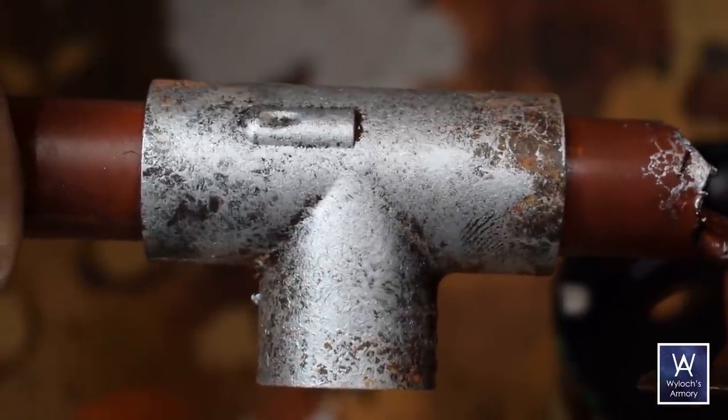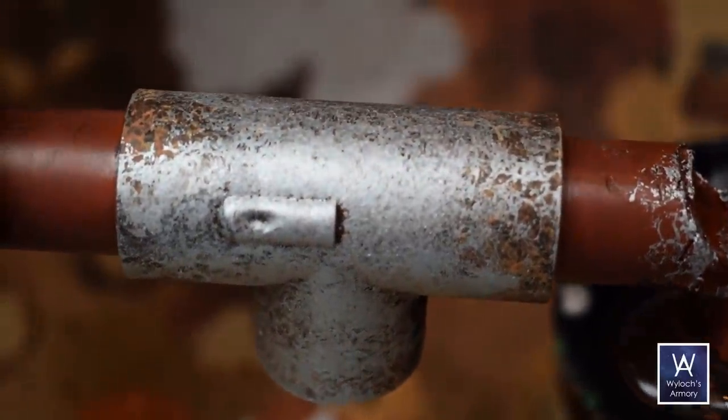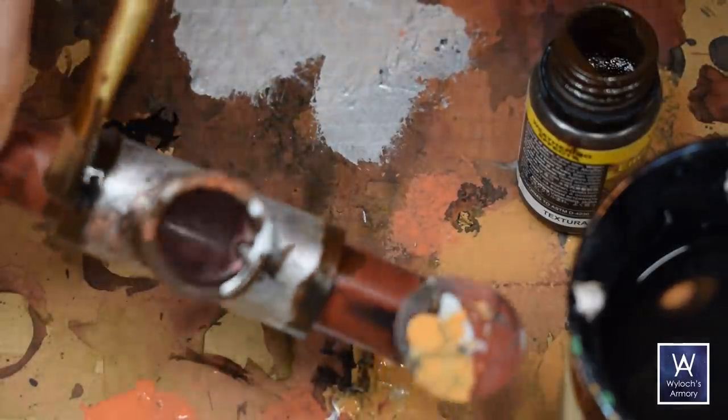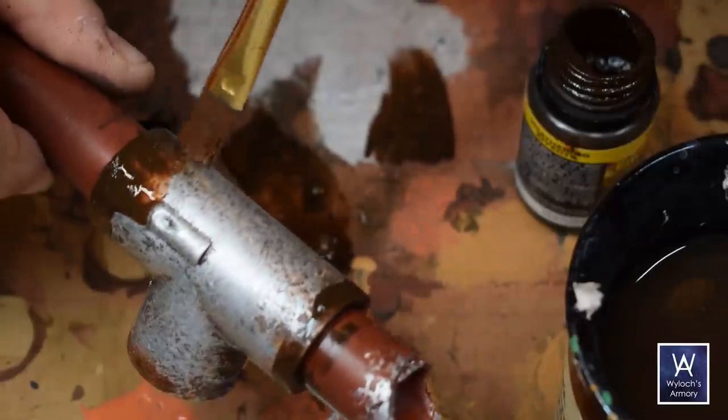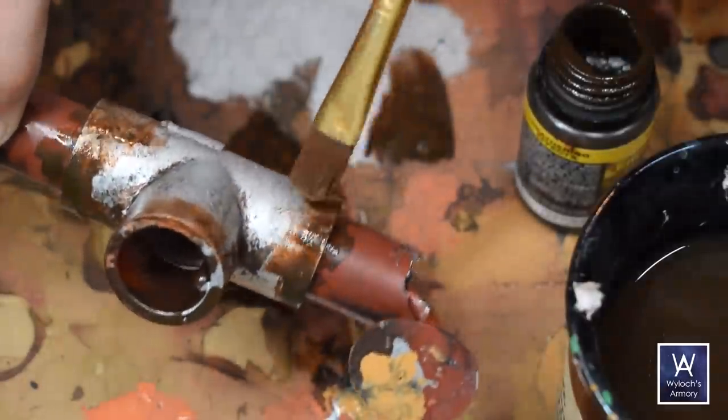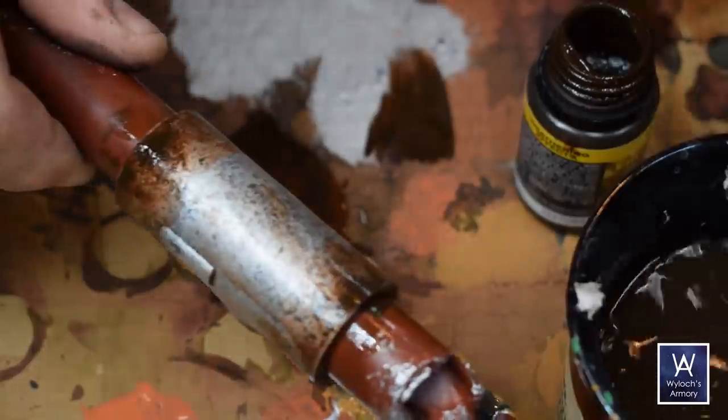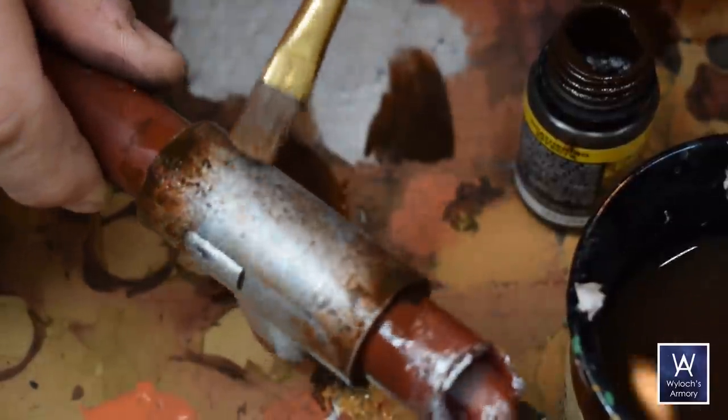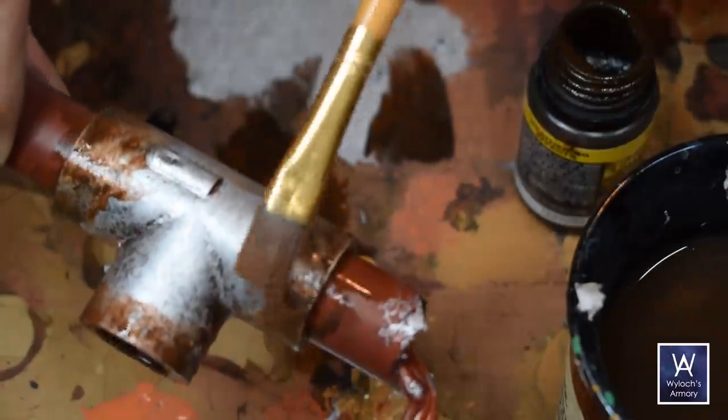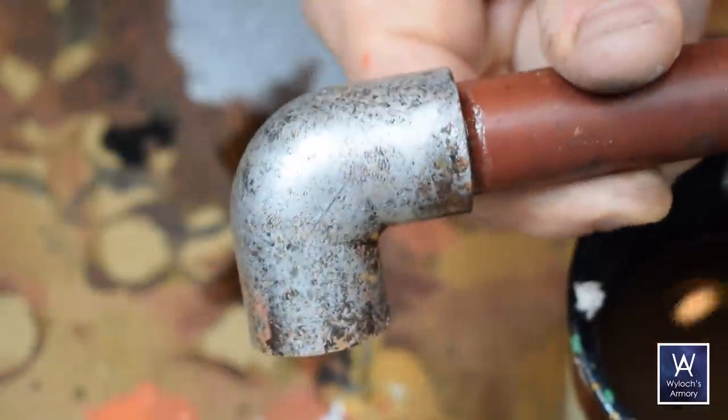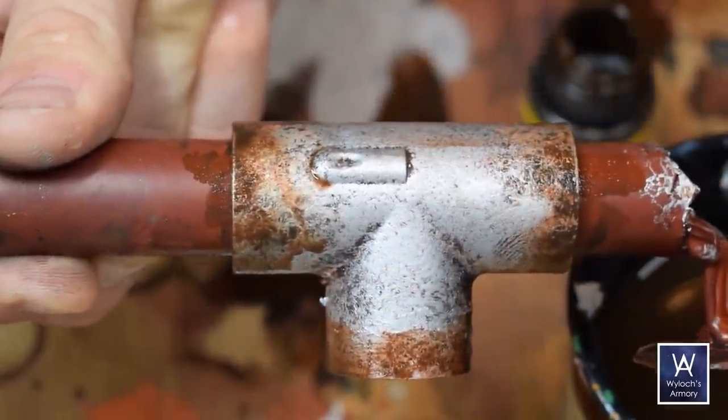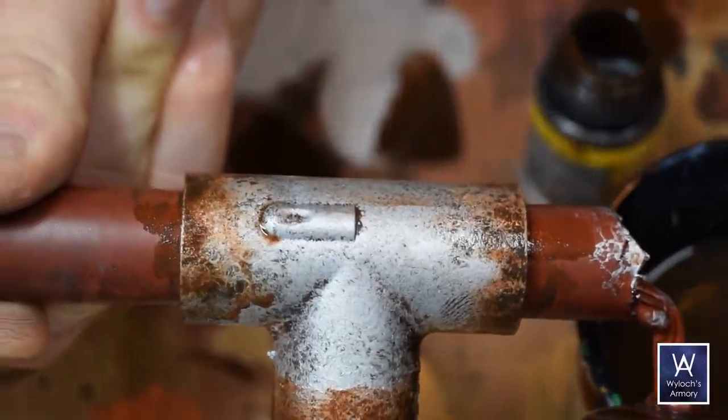But I wanted to try out that Vallejo rust effect. So, I painted some on straight from the bottle around the collars, where the pipe enters a junction. And then with a slightly watered brush, dabbed at it to sort of blend it out, smooth it out. So yeah, pretty awesome. Again, not necessary. Here it is with the effect. And here it is without. You could probably substitute some watered down brown acrylic paint and get a similar looking effect if you wanted.